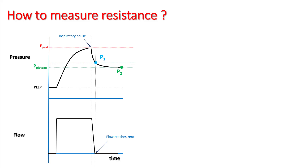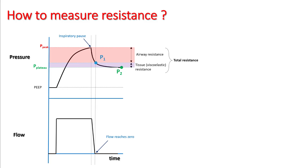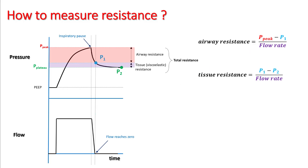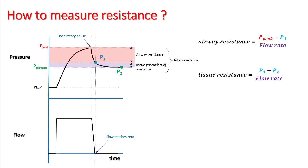Resistance consists of two parts: airway resistance and tissue resistance, which is caused by stress relaxation and the pendelluft phenomenon. Combining these two gives you total resistance. Airway resistance is given by peak pressure minus P1 divided by the flow rate, while tissue resistance is given by P1 minus P2 divided by the flow rate. Remember that P2 is nothing but plateau pressure. Total resistance is given by peak minus plateau divided by flow rate.